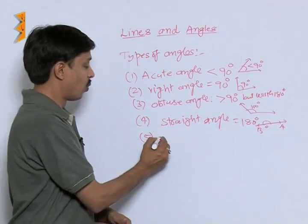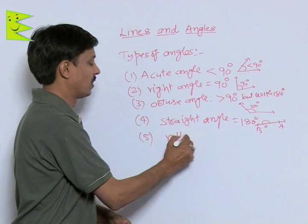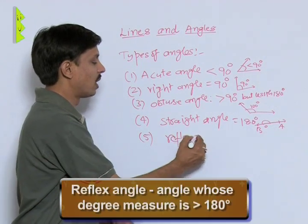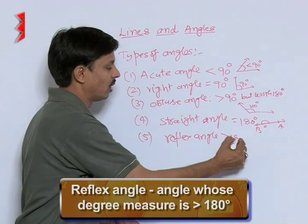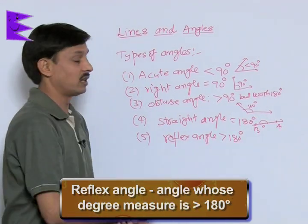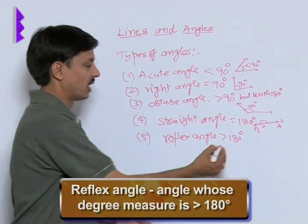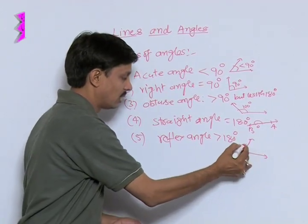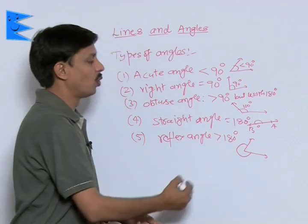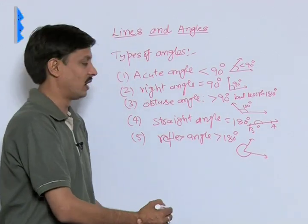Now, the fifth is what is the reflex angle? If I tell you about the reflex angle it is so simple. An angle whose degree measure is greater than 180 degree. That is if this is the angle then this angle is known as its reflex angle.